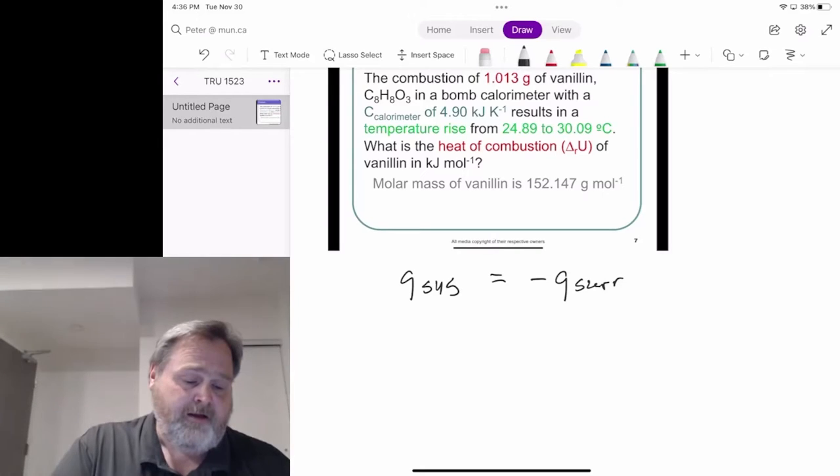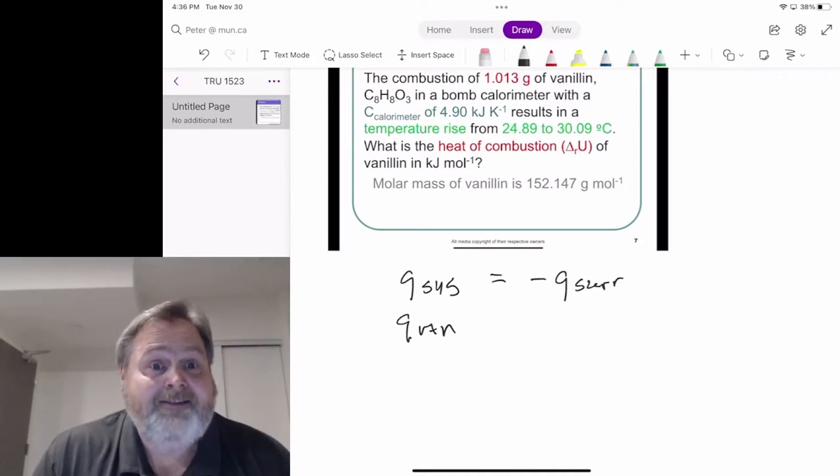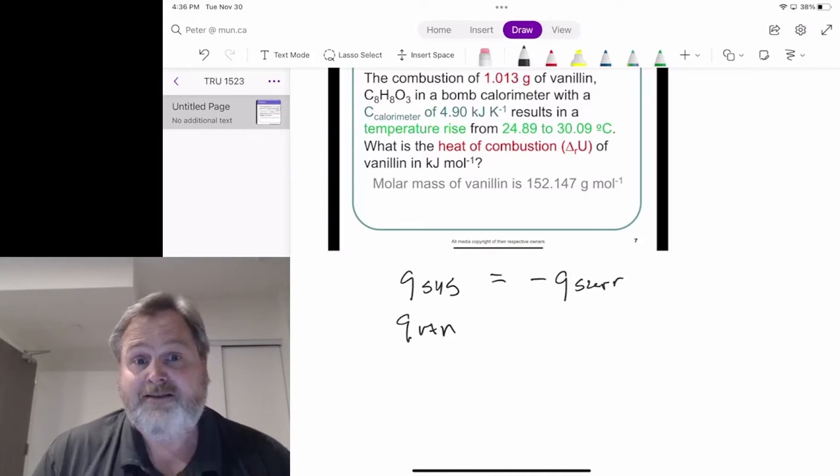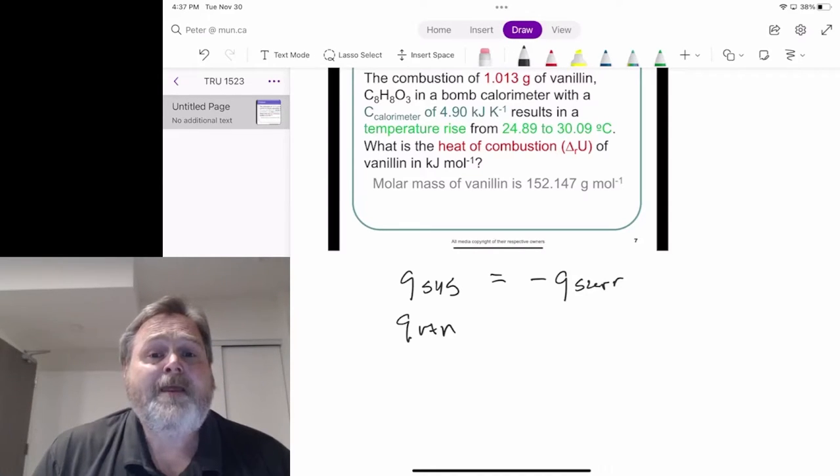Well, what's our system? Well, in this case, it's the chemical reaction we're interested in. The system, we tend to choose to be the thing that's happening in the universe that's of most interest. We're burning vanillin. We want to know what that heat of combustion is. Well, that's going to be our system then, the reaction.